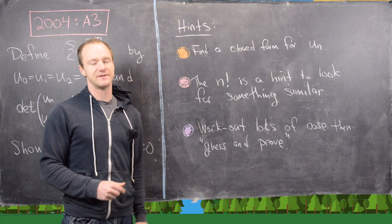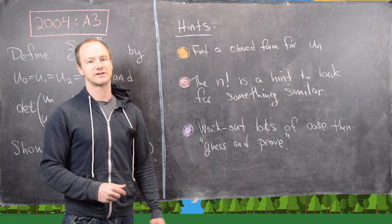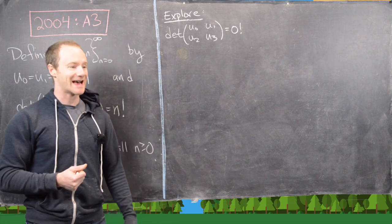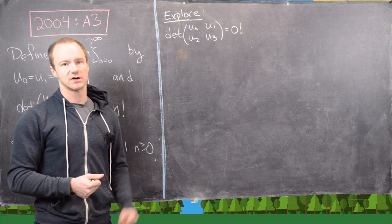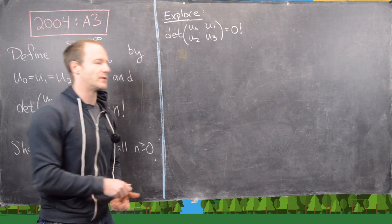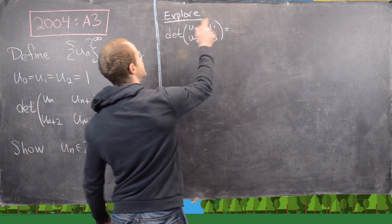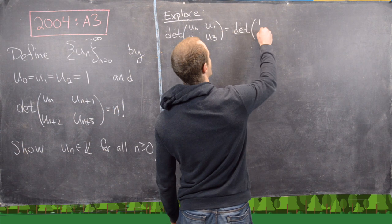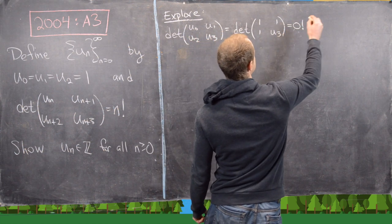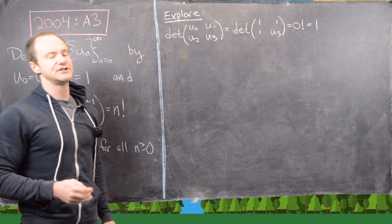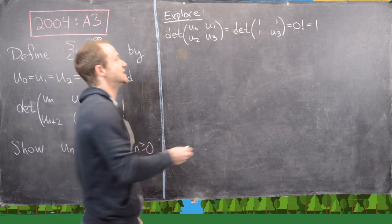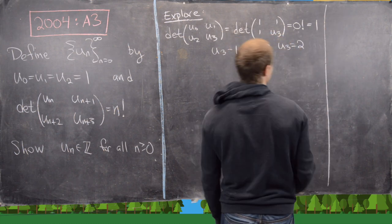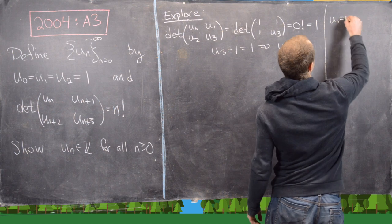I'll give you some time — make sure to pause the video and try these hints to solve this problem. We're going to follow this strategy: guess and prove the closed form for u_n. The first determinant that includes something we don't know is the determinant of u_0, u_1, u_2, u_3. Since u_0, u_1, u_2 all equal 1, this is the determinant of the 2×2 matrix [1, 1; 1, u_3], and we need that to equal 0 factorial, which is 1. The 2×2 determinant is AD − BC, so u_3 − 1 = 1, meaning u_3 = 2. Let's keep a list: u_0 = u_1 = u_2 = 1, and u_3 = 2.